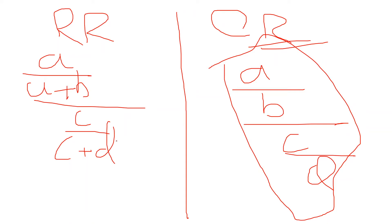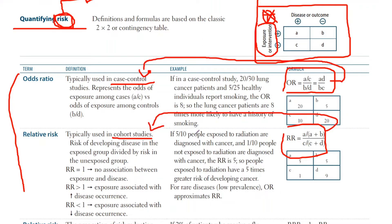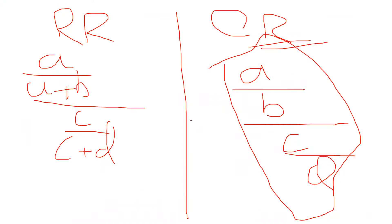I'm going to assume you already understand the difference between case-control and cohort studies. I have a video on study design if you'd like more detail. Now I want to relate the formula to why they picked each study design. Just a note: this will hopefully never be tested on your Step exams. They care more about whether you can calculate relative risk and odds ratio.